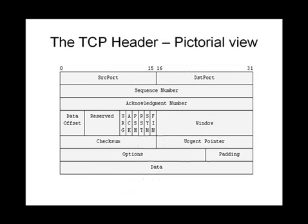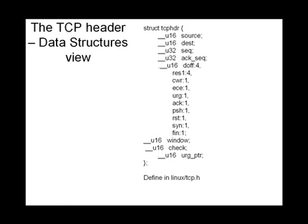Similarly, this is how the TCP header looks: source port, destination port, sequence number, acknowledgement number, flags, window, checksum, etc. And this is how it maps onto a data structure defined in tcp.h. Once again, we've encountered this in the sniffer tutorial — this is just a recapitulation.